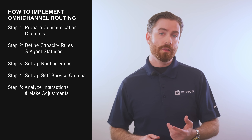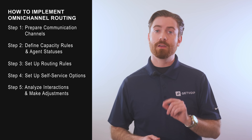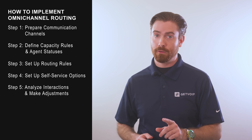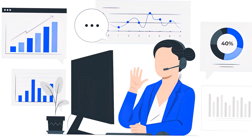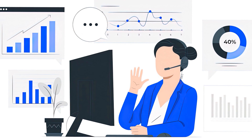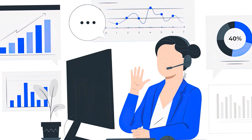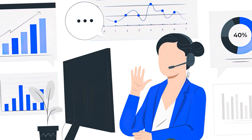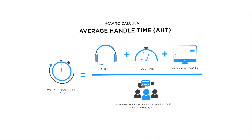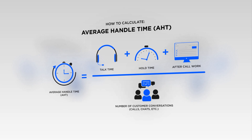Step 5: Analyze Interactions and Make Adjustments. Your Omni-Channel Routing will likely need to be adjusted once you have more data. Most CCaaS providers include reporting and analytics tools to monitor key metrics such as channel usage, first response time, and average handle time.